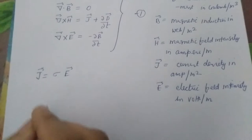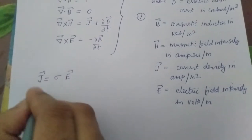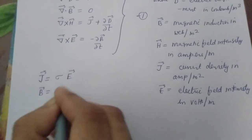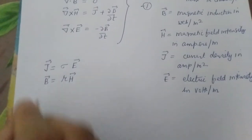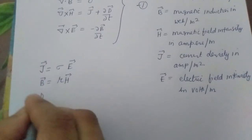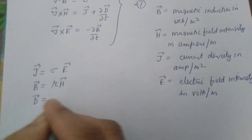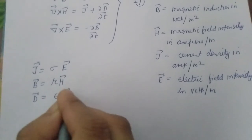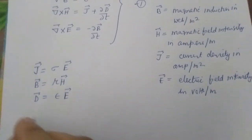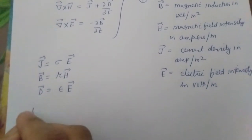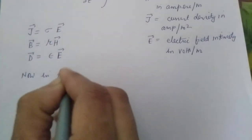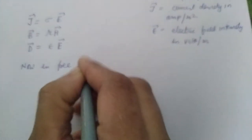Now we have J equal to sigma E, where sigma is the conductivity; B equal to mu H, where mu is the permeability; and D equal to epsilon E, where epsilon is the permittivity.